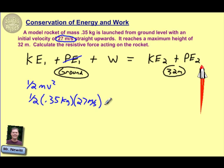Now the work that's then going to be done on that rocket is going to be equal to the force, the resistive force, which is what we're trying to find, multiplied by the distance that that resistive force is done over. So that is going to have to equal, on the right side of the equation,